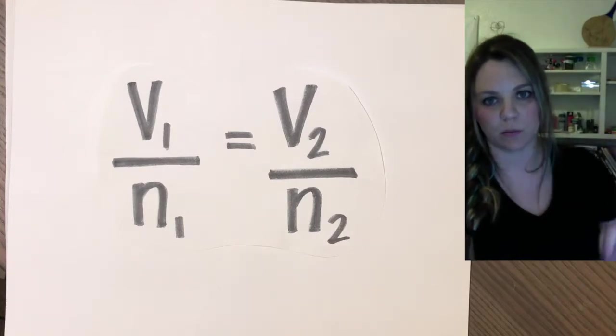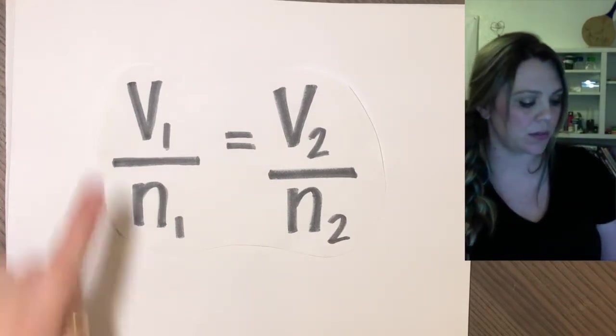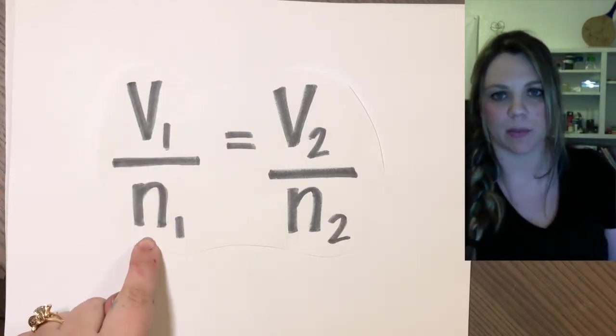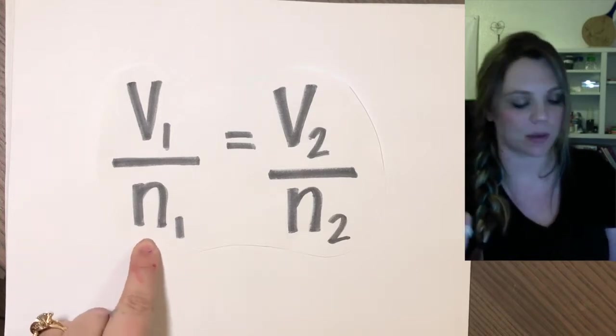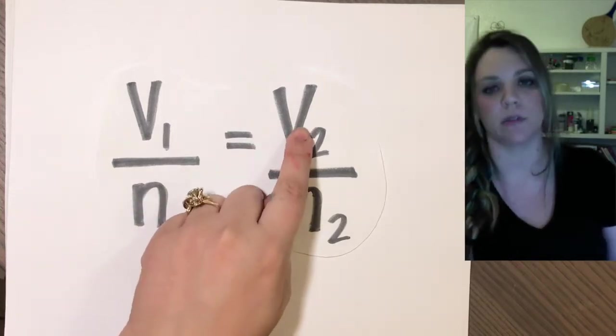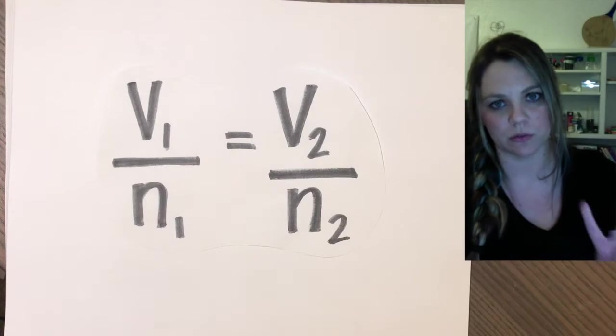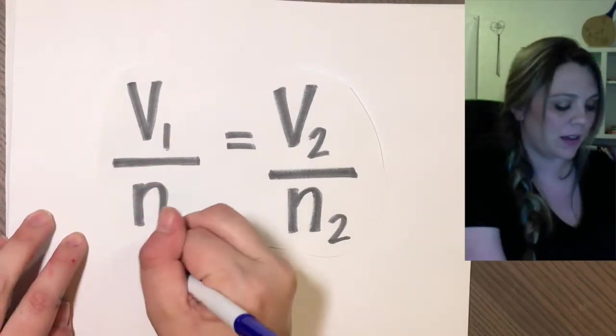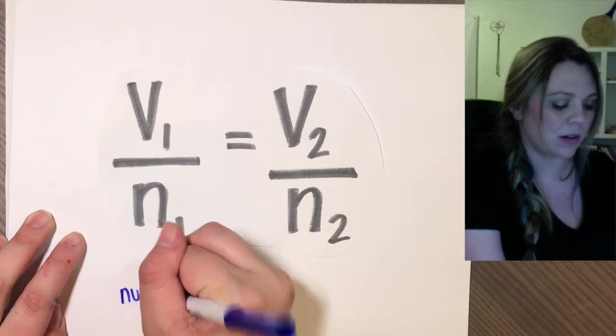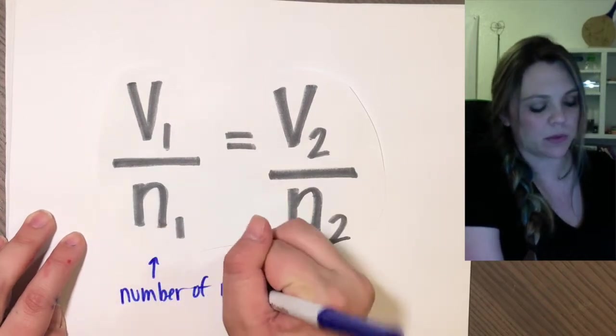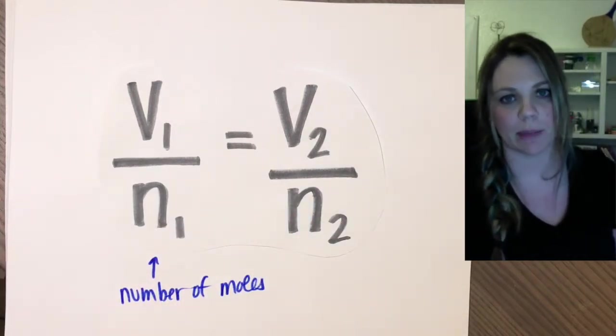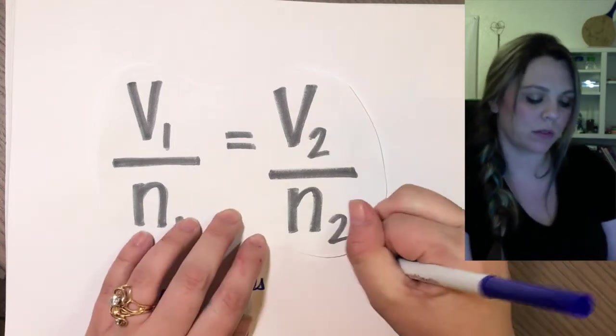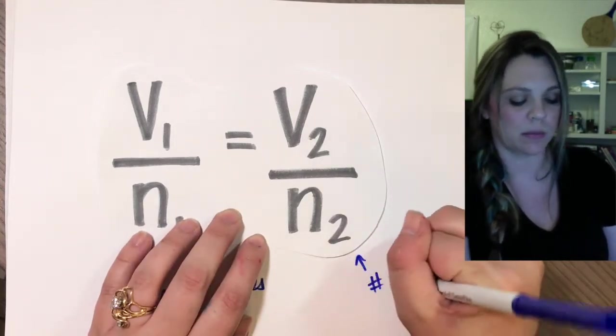This is one of the one over the other relationship. So volume one divided by number of moles one equals volume two divided by number of moles two. V1 over N1. N, this means the number of moles, right? It stands for amount, number of moles. Same thing here, number of moles.